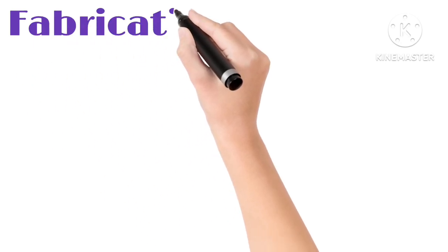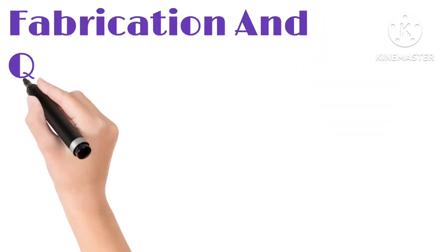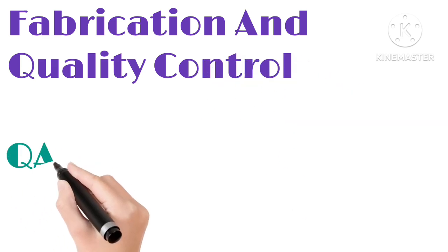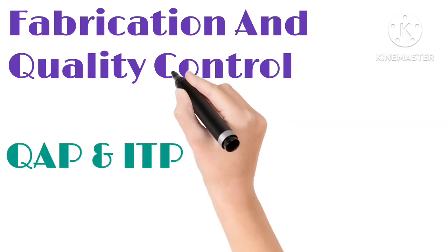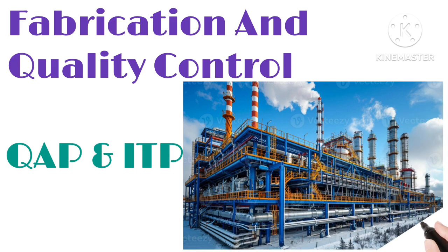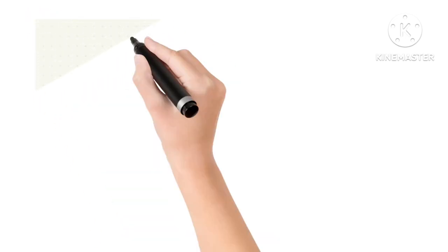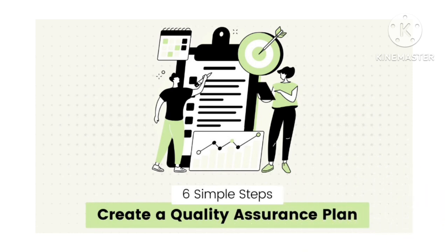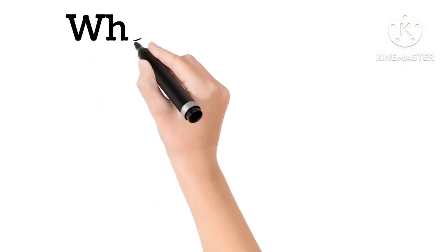Hi everyone, welcome back to the channel. I'm Rajendra and in today's video we are diving into a very important topic in the world of fabrication and quality control: the QAP and ITP. If you have ever been involved in manufacturing, inspections or third-party audits, you know how crucial these documents are. We will explore what QAP and ITP mean, how to create them, and I'll show you a sample template you can use for your own projects. Let's get started.